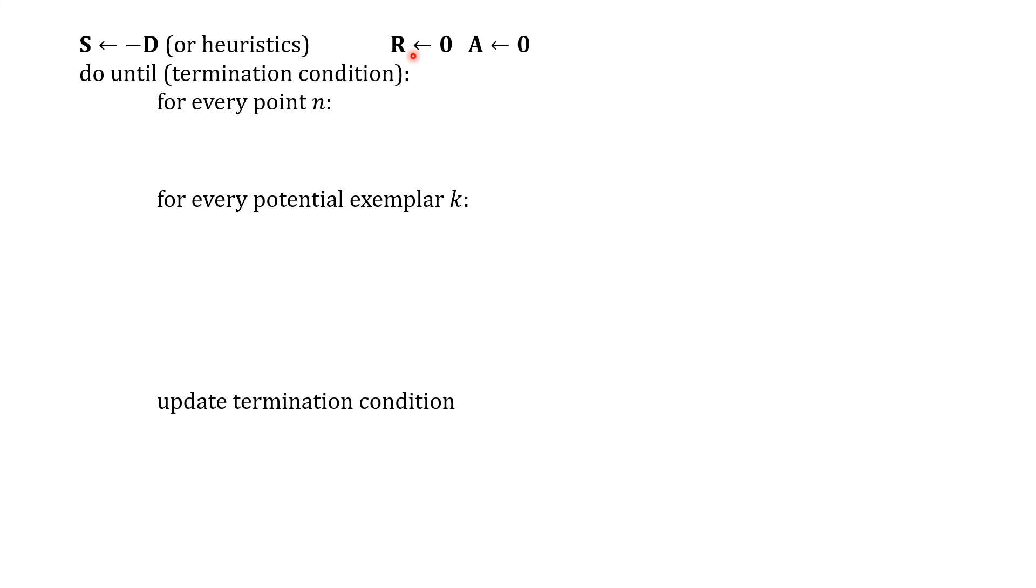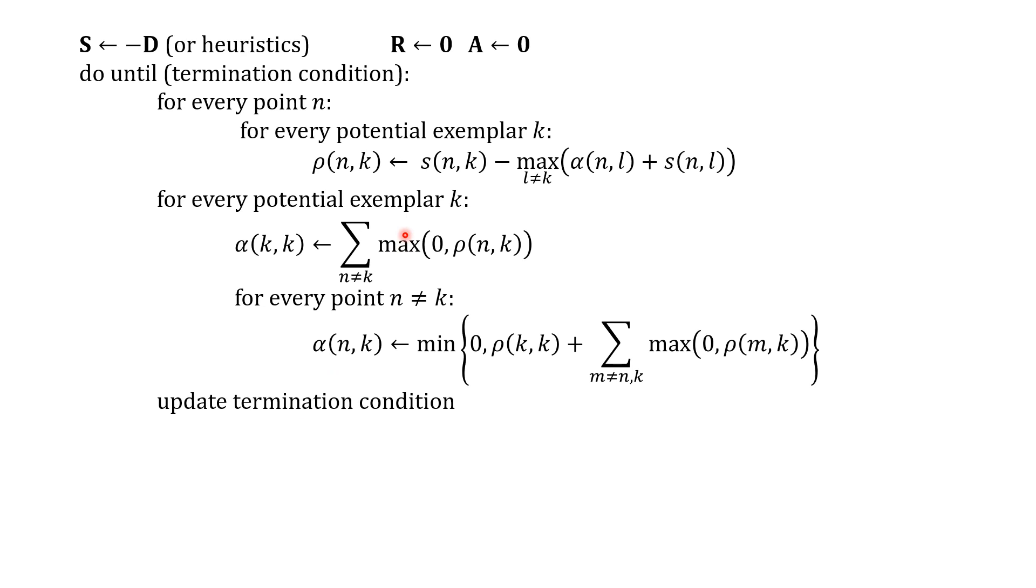The responsibility matrix and the availability matrix, both of these are initialized to zeros. And so for every point n, this is what we do: we send out the responsibilities.